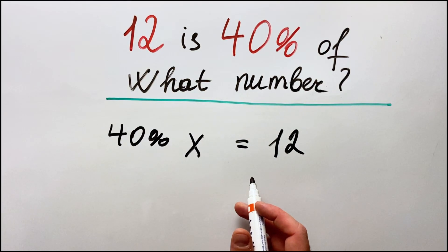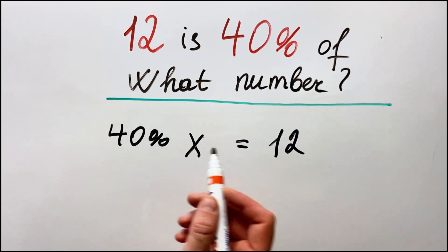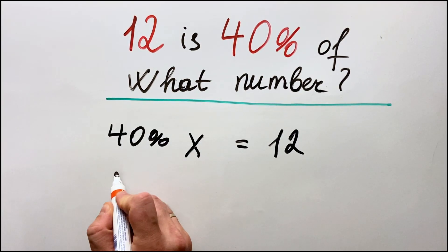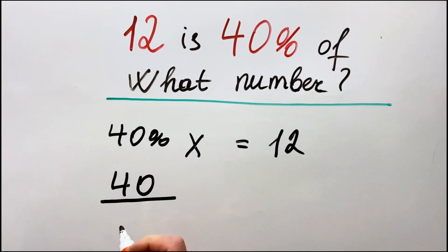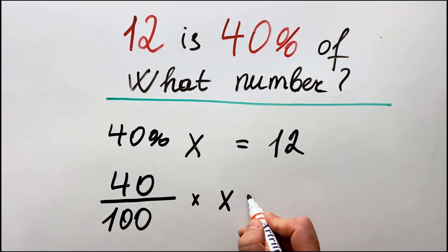What does it mean? So 40 percent we can also write as 40 over 100 multiply by x equals 12.